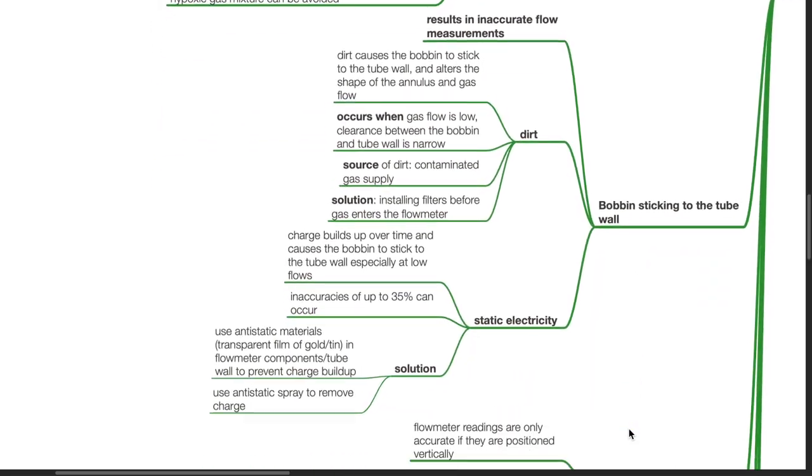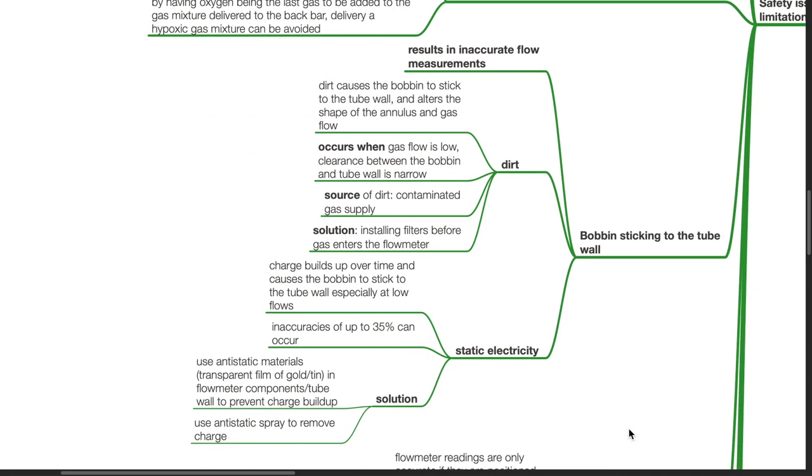Bobbin sticking to the tube wall results in inaccurate flow measurements. It can be caused by dirt or static electricity. Dirt causes the bobbin to stick to the tube wall and alters the shape of the annulus and gas flow. This occurs when gas flow is low.